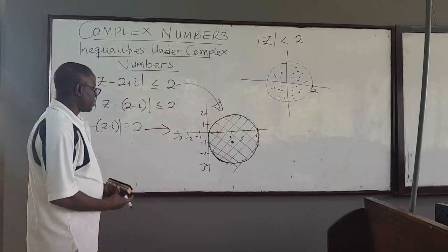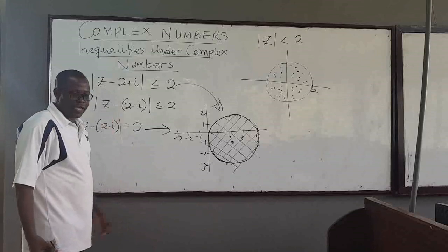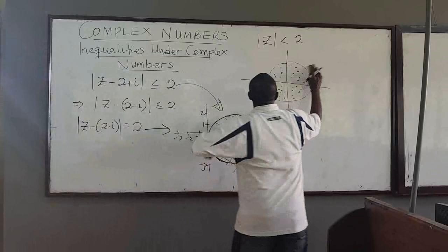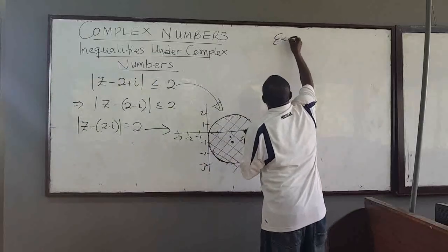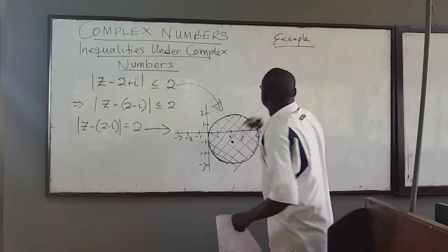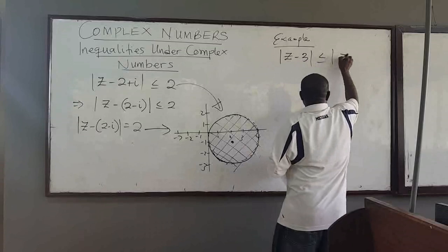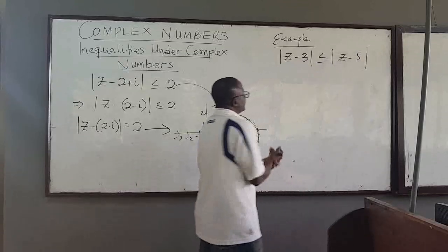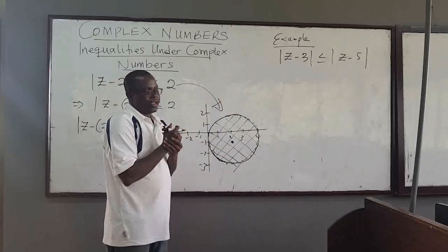Basically, that is how you represent regions on an Argand diagram using inequalities. Now let's look at some other interesting ones. Take a look at this example: represent the region for the absolute value of z minus 3 less than or equal to the absolute value of z minus 5. How do you sketch the region represented by this on an Argand diagram?